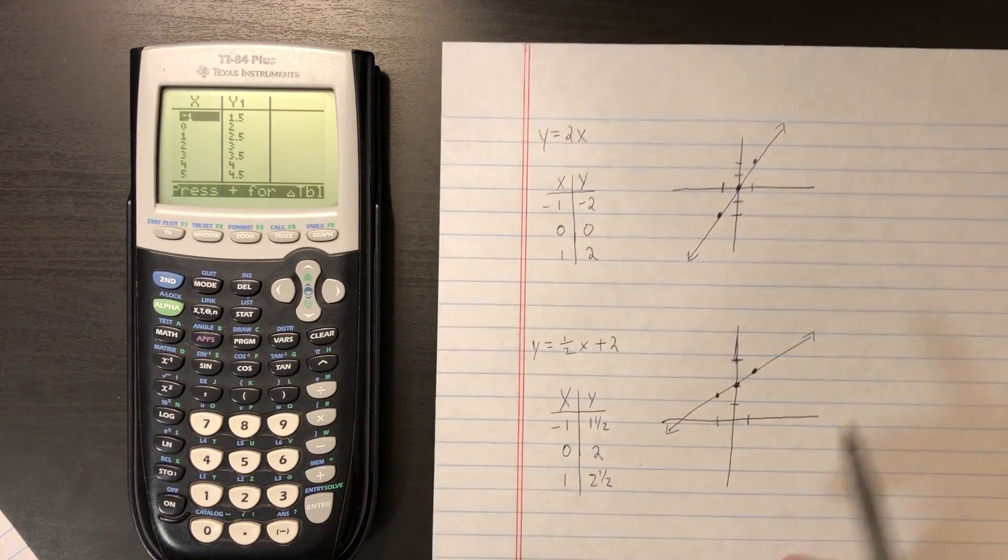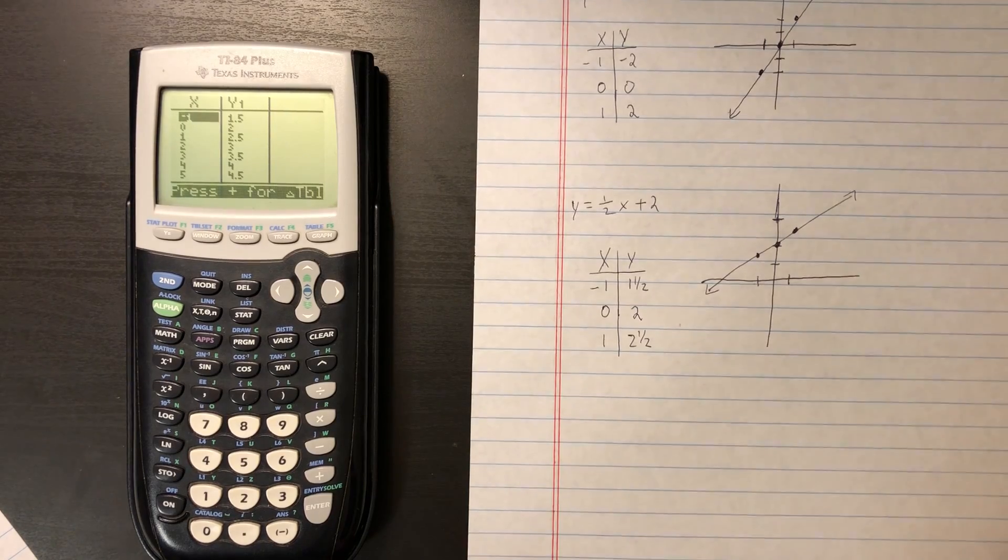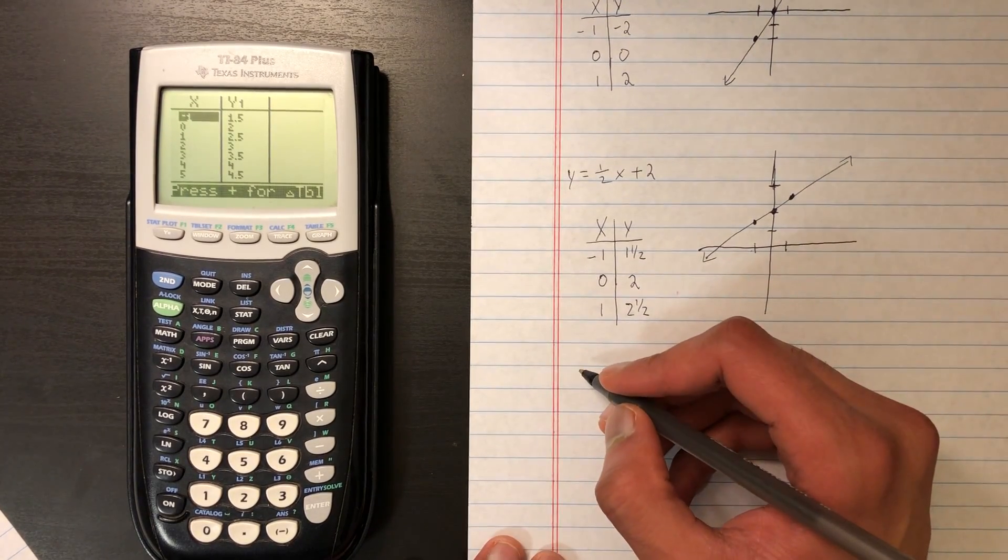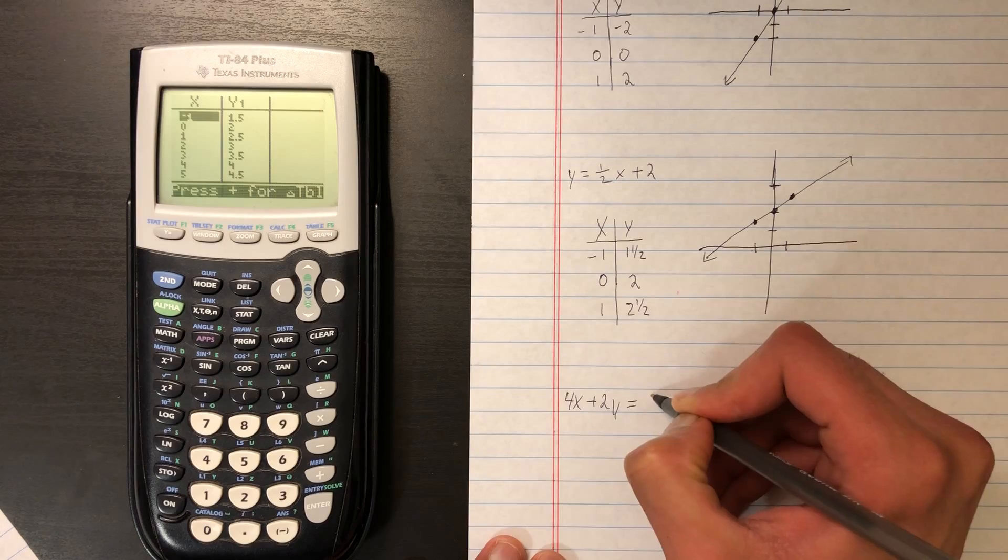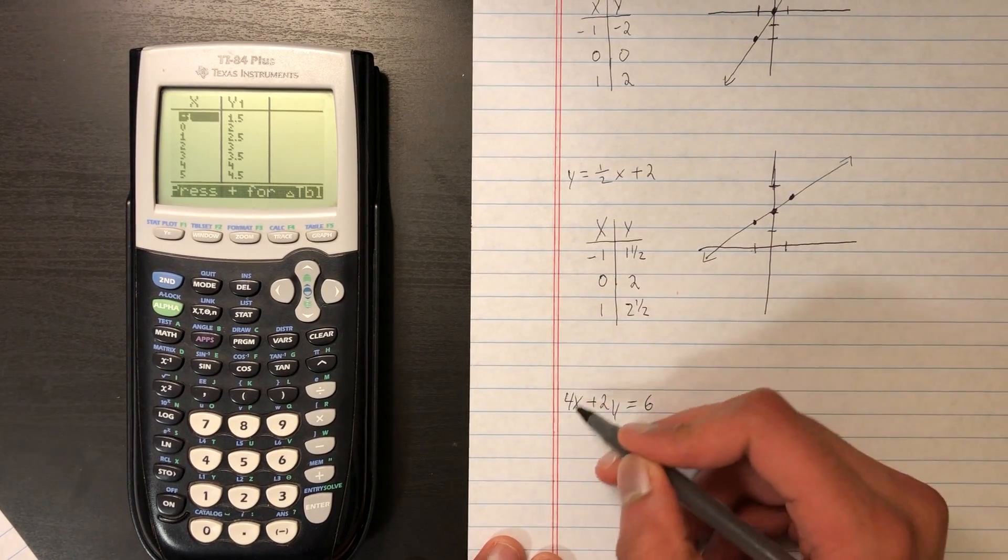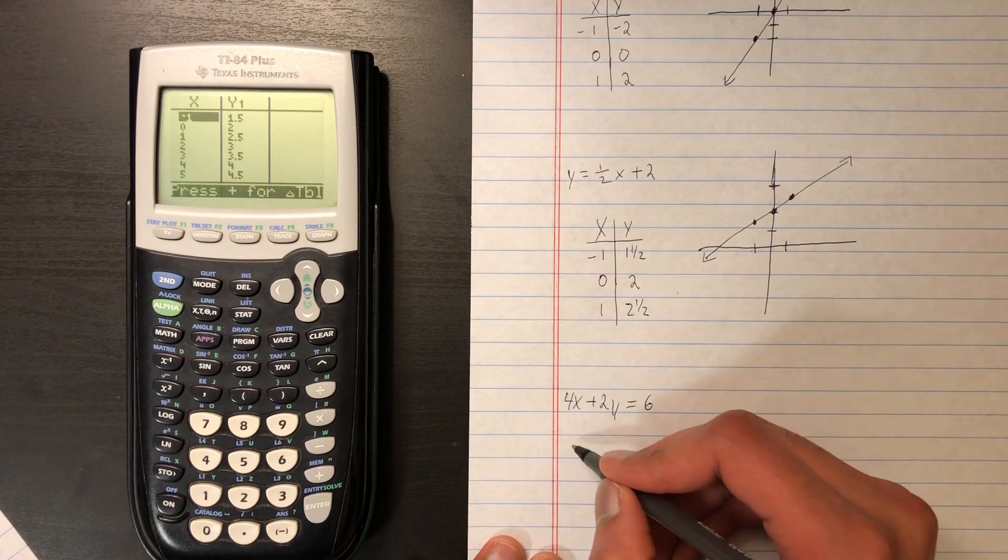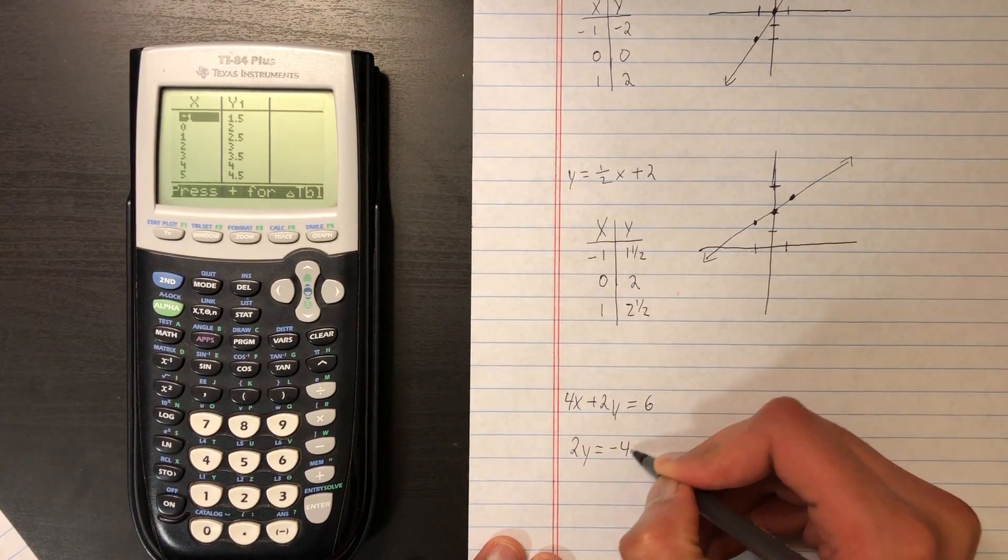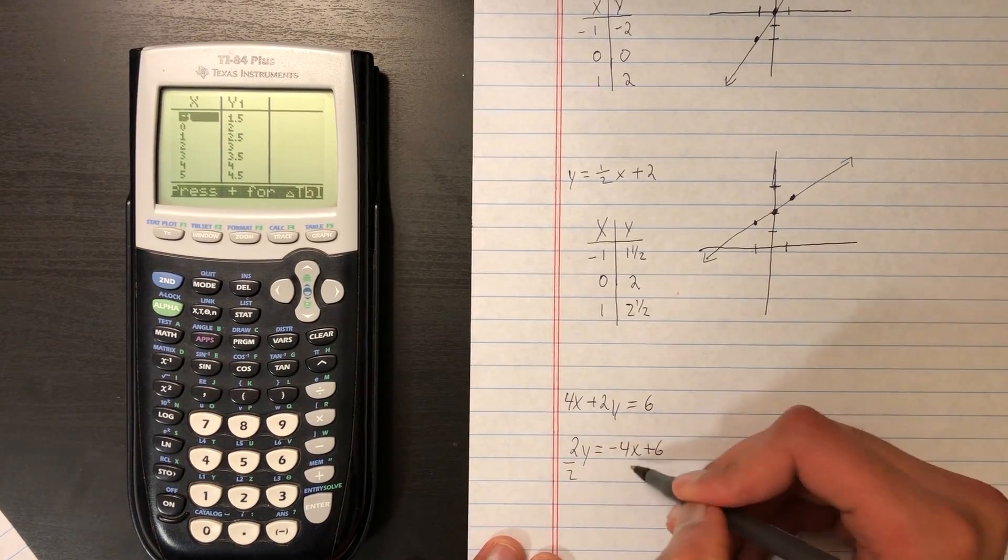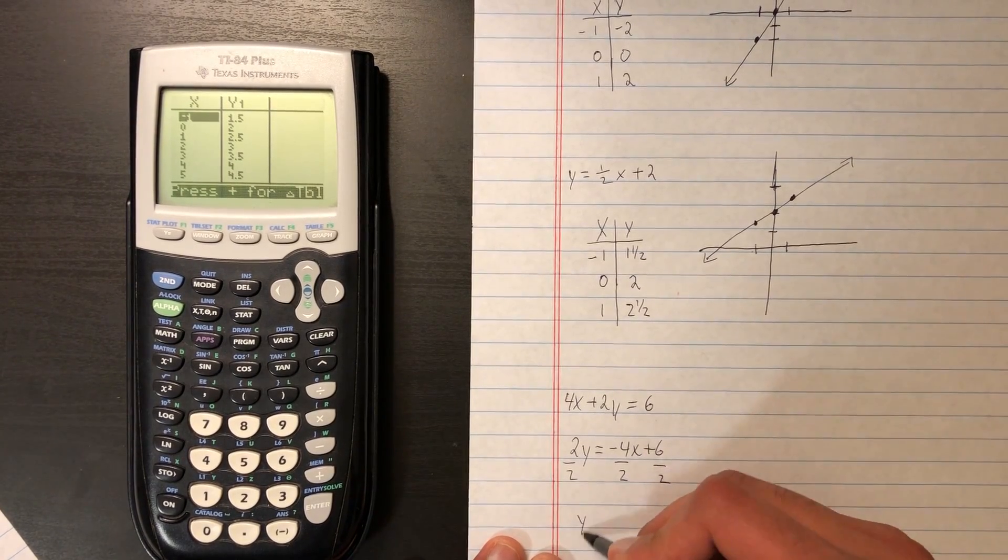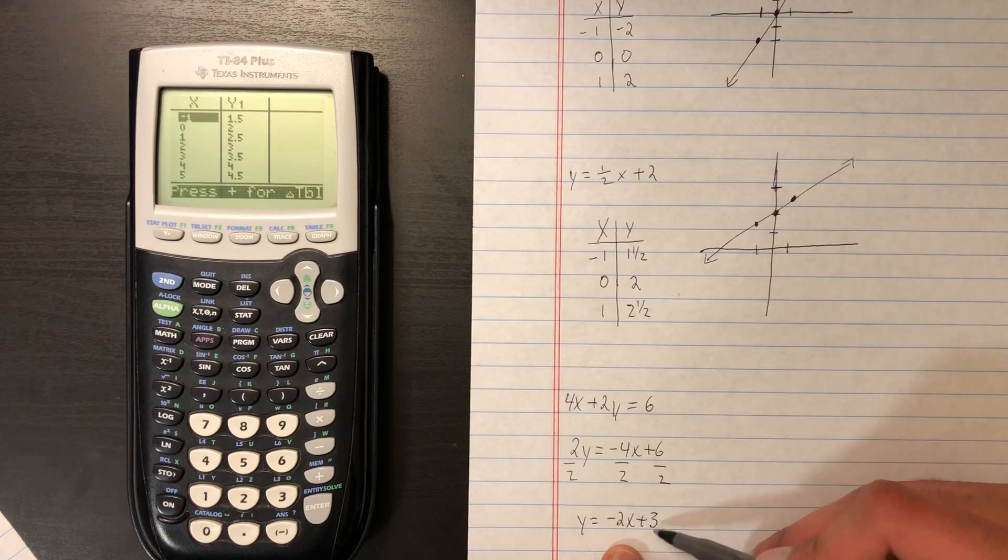And let's do one last example of a line that's not in y equals mx plus b form. Let's do 4x plus 2y equals 6. So let's try to put this in y equals mx plus b form. We'll move the 4x to the right side. So 2y equals negative 4x plus 6. Let's divide both sides by 2, so we can get y by itself. So then it's going to be y equals negative 2x plus 3. Perfect. We have our equation in y equals mx plus b form.